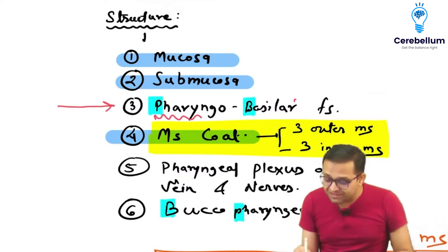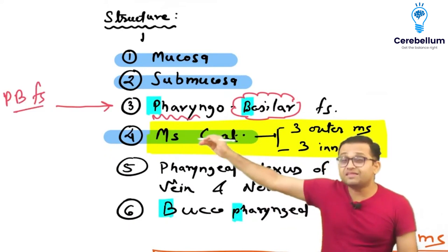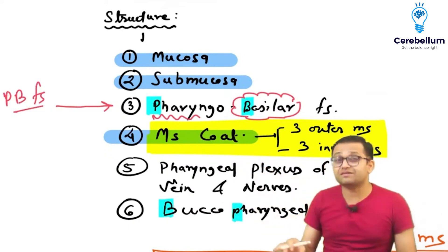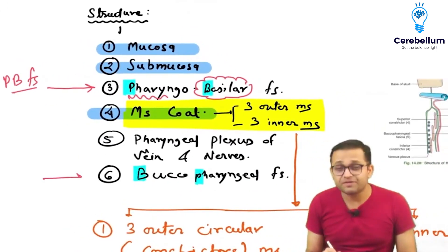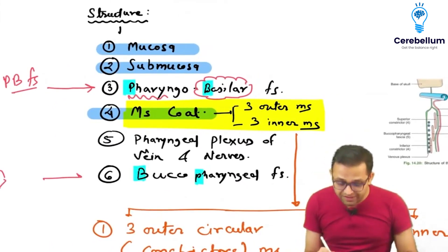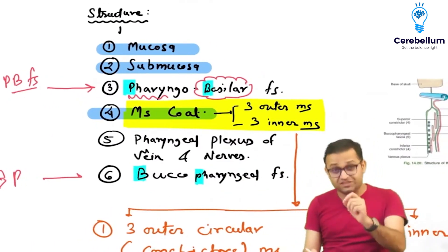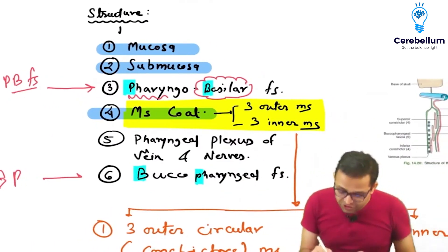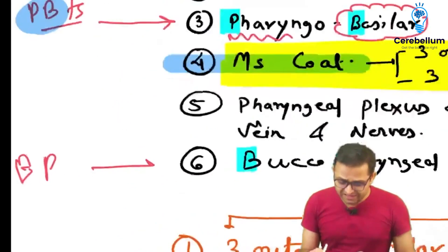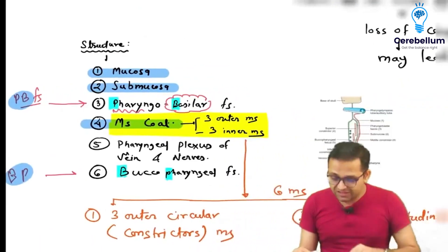That inner fascia is related to the pharynx — that's why it is called 'pharyngo' — and it is attached to the base of the skull, so it is called 'basilar.' You can remember it as the PB fascia. Then there is a muscle layer, and outside the muscle layer there is one more fascia related to the buccal cavity and the pharynx — the buccopharyngeal fascia, or BP fascia.